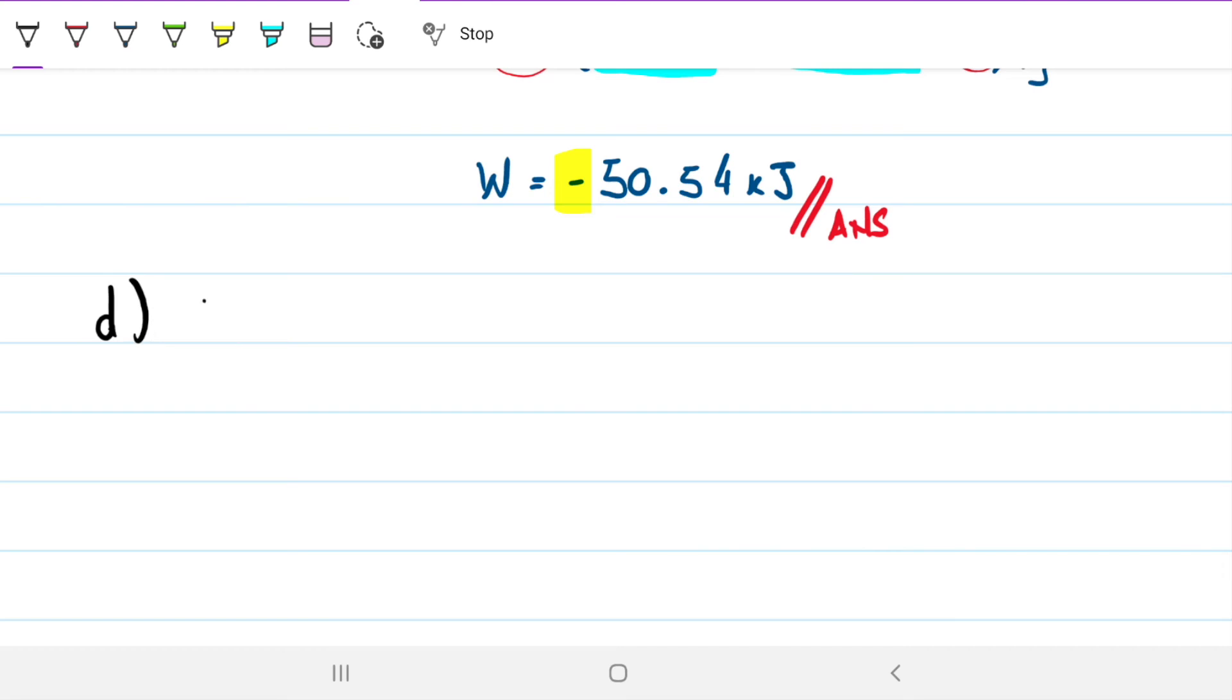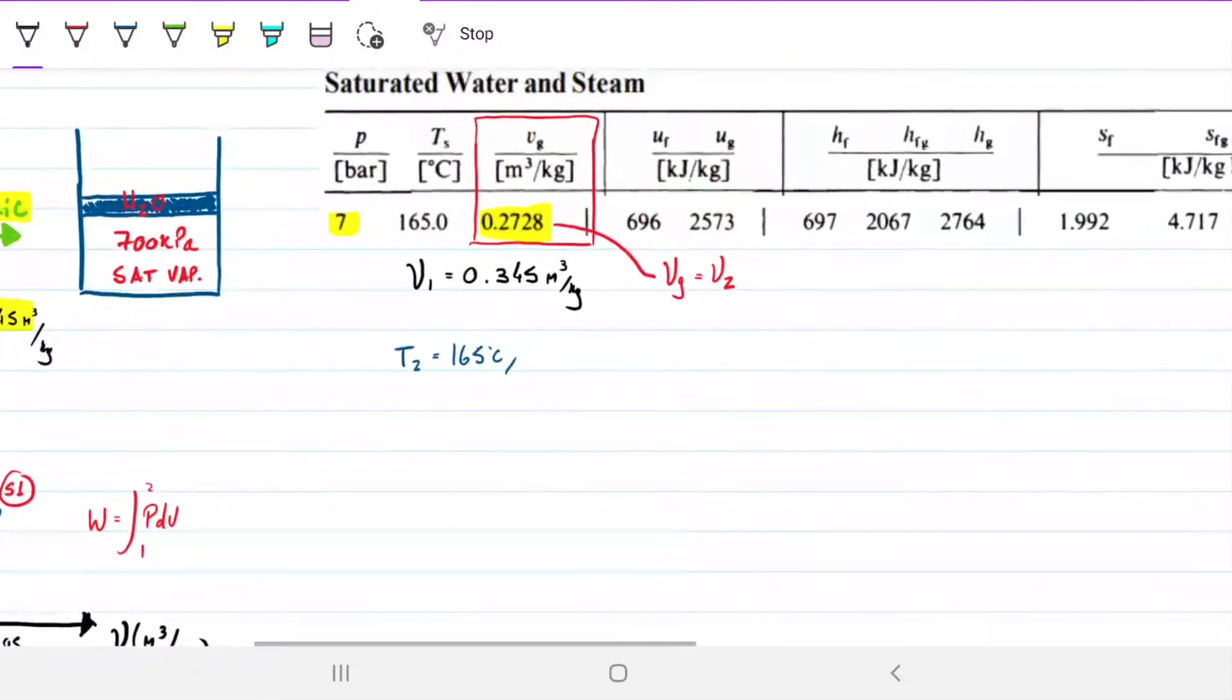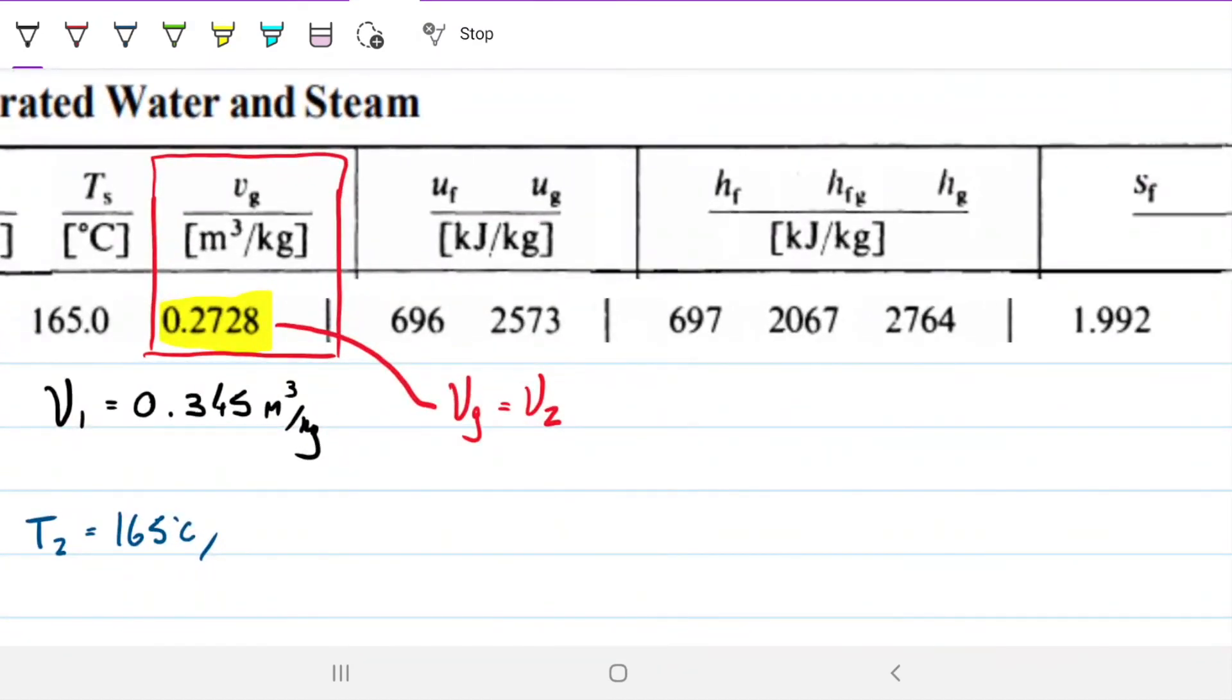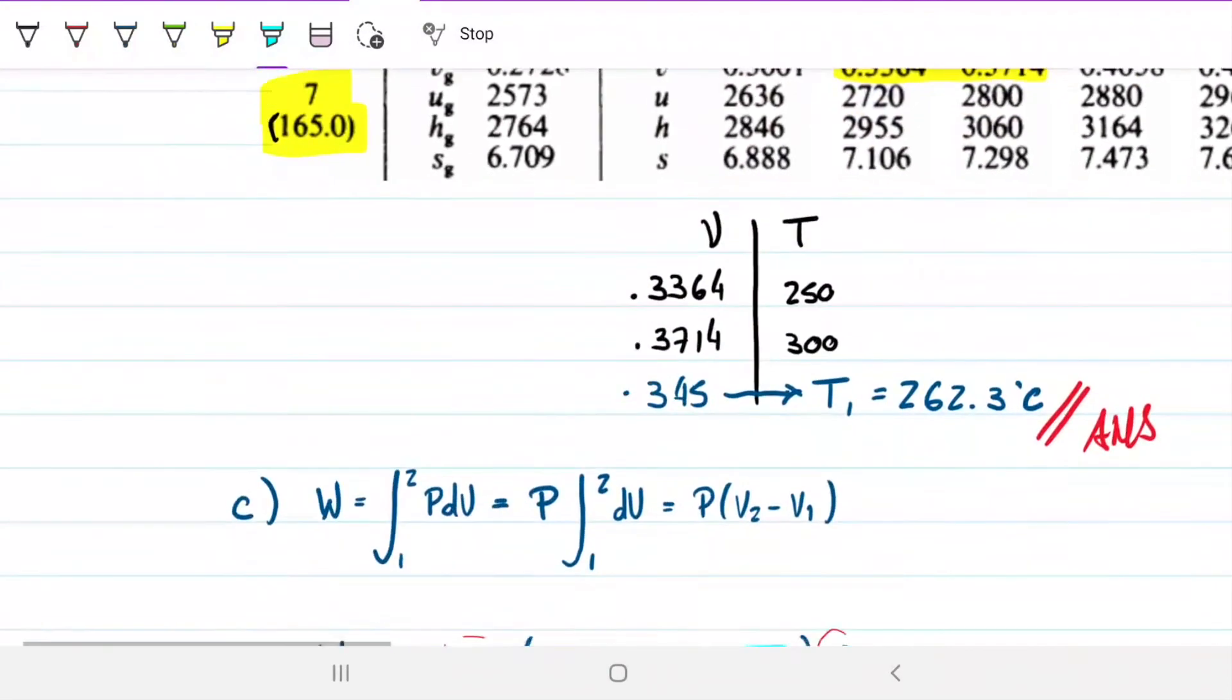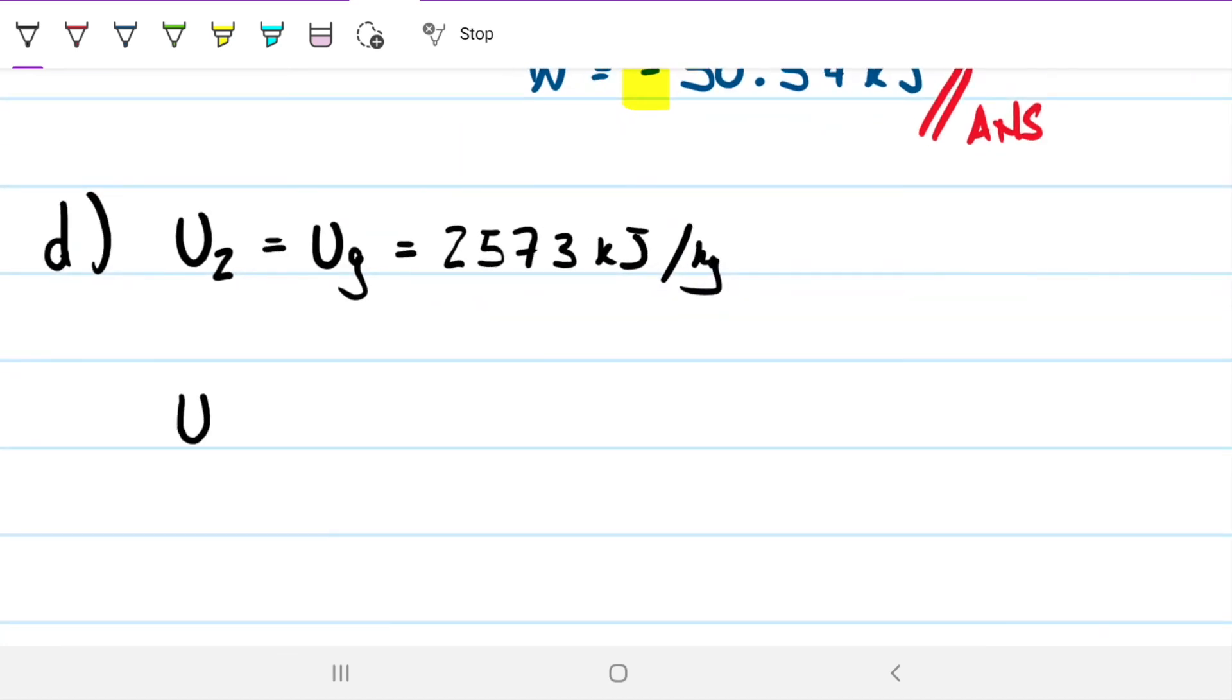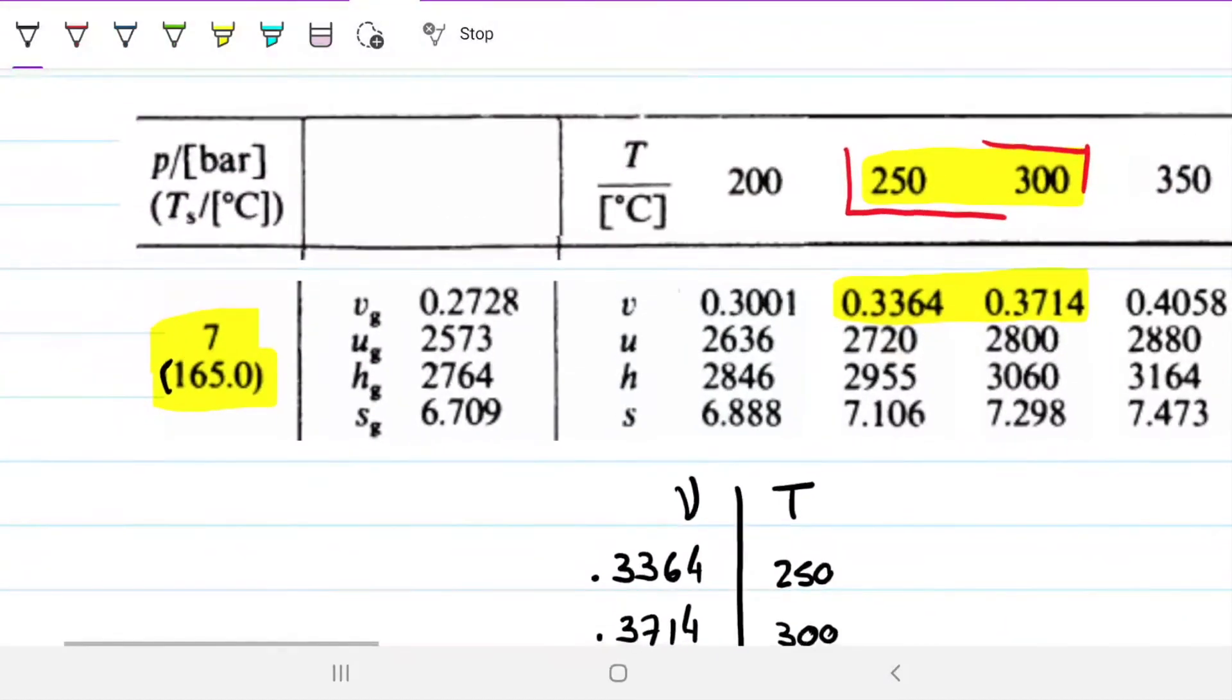Let's see if the internal energy was responsible for absorbing the surplus of energy. Our U2, our internal energy 2, because this is a saturated vapor, it's quite easy. It's going to be Ug from the table we saw in the beginning. So let's go back to the saturated table. What I'm looking for is my Ug. That's going to be 2573, so Ug is 2573 kilojoules per kilogram. That's very straightforward.